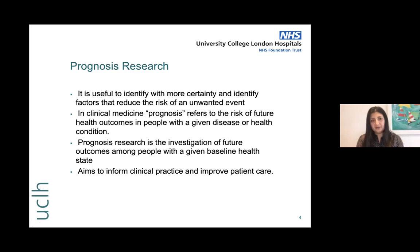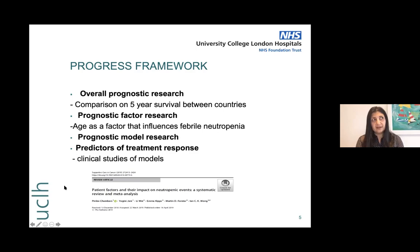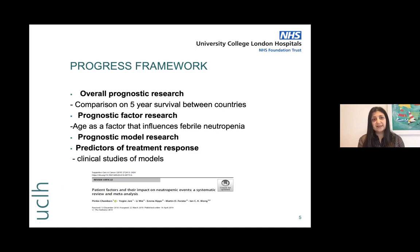When we do prognosis research, we're investigating future outcomes of people — this is where we refer to it as risk prediction, or prognostic modeling. Prognostic research aims to inform clinical practice and improve patient care. A framework was developed by the PROGRESS group, called the PROGRESS framework, because loads of prediction models were being made but none of them were being used in practice.